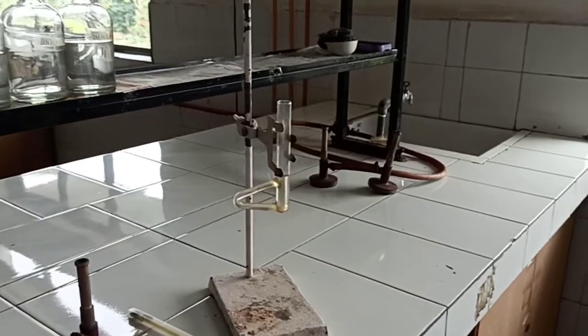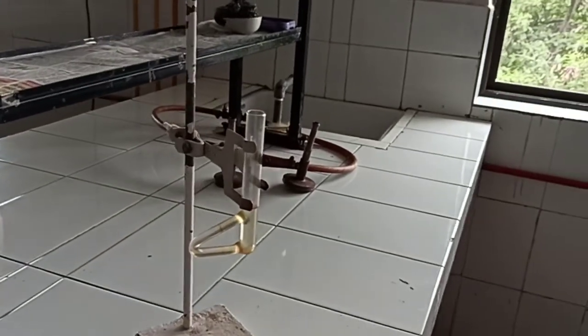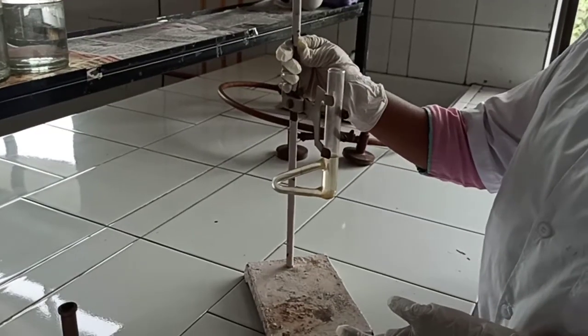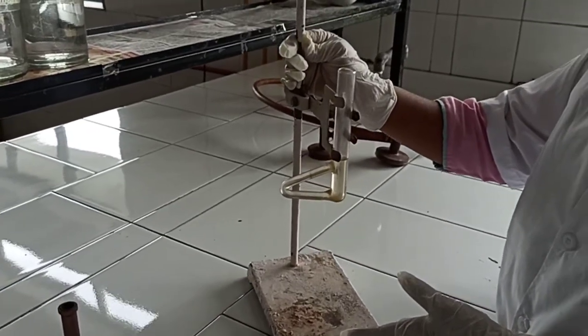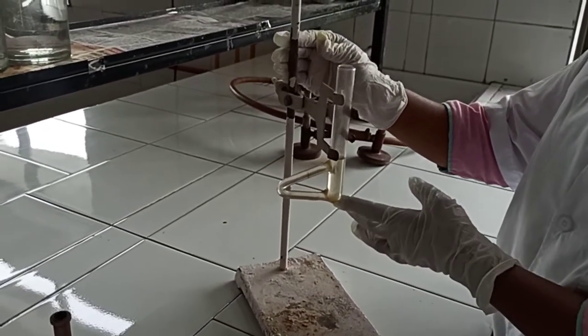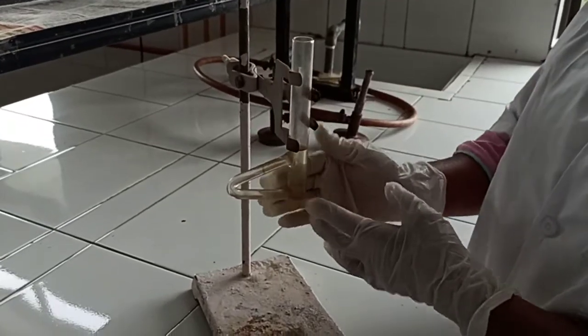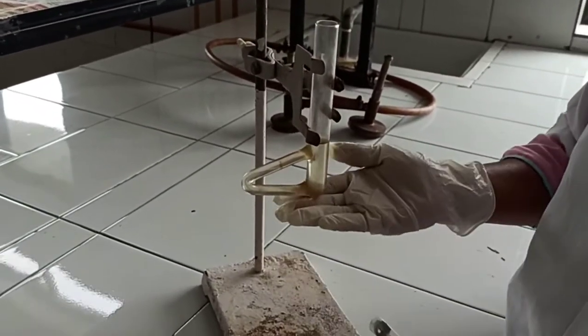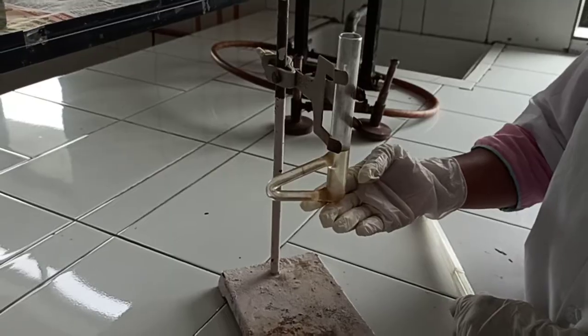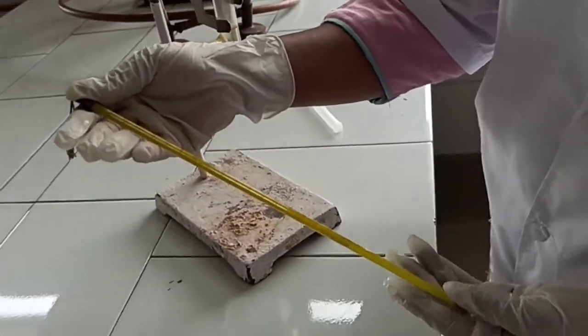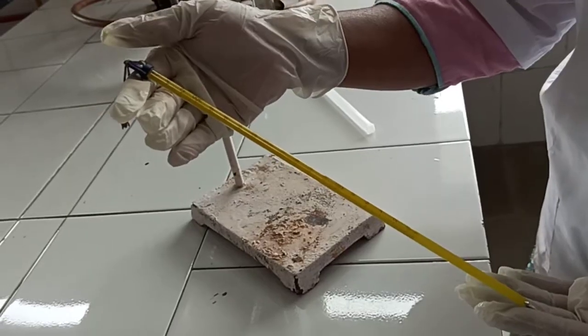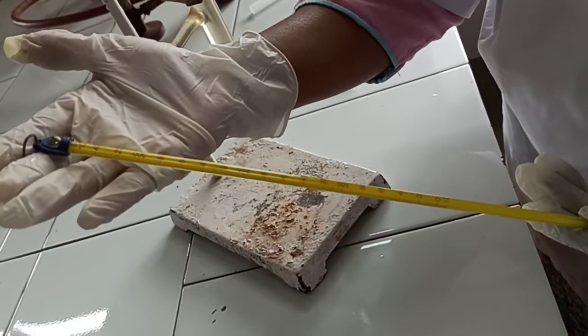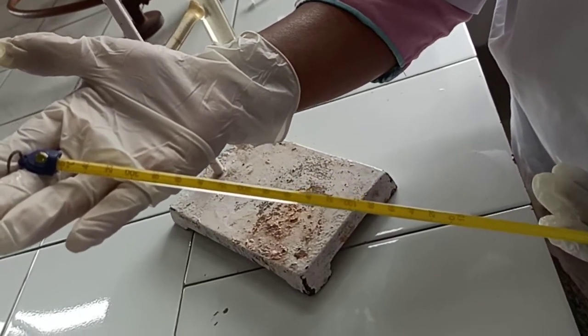See the different apparatus. This is stand that we require for holding tilts tube and ring. Then this is a tilts tube which consists of liquid paraffin. Here, the chemical thermometer is there. We can measure the temperature from 10 to 360 degrees Celsius.